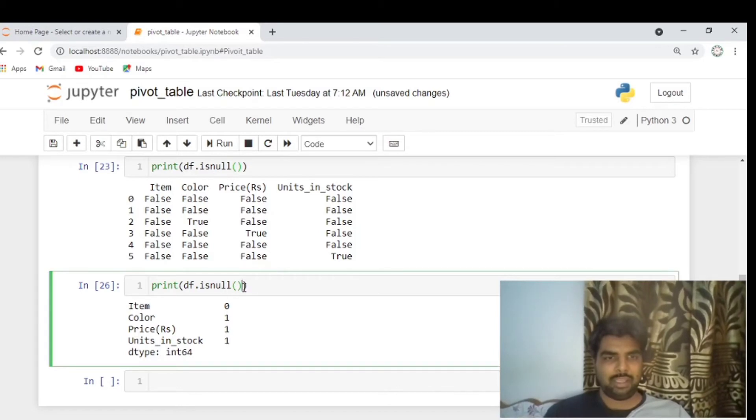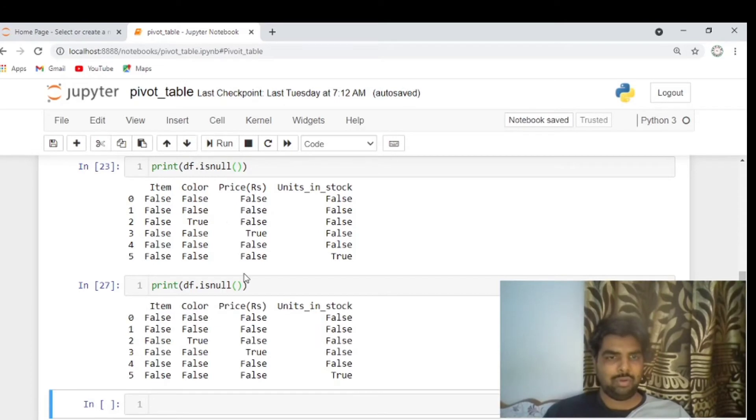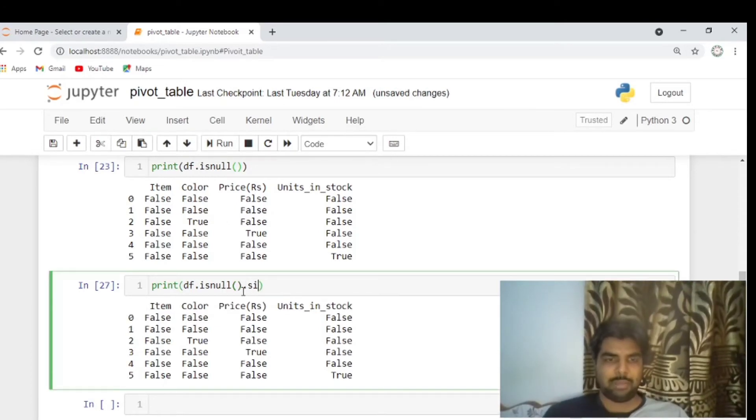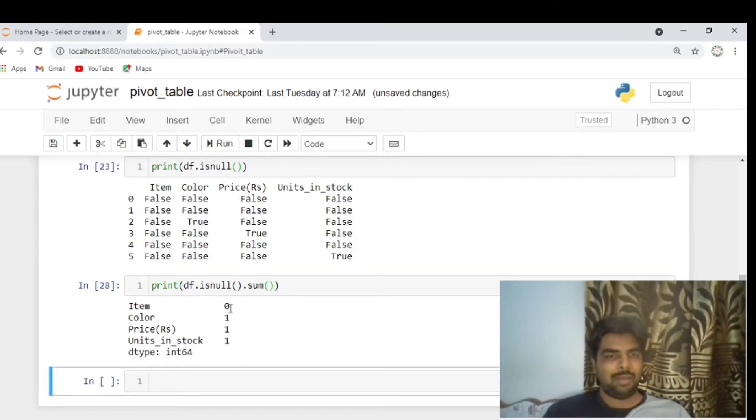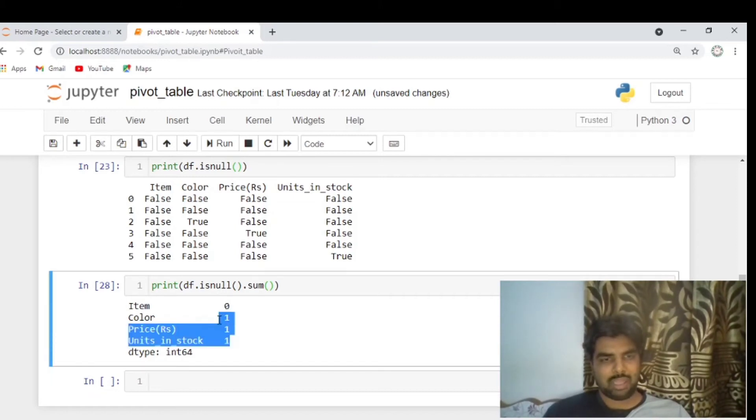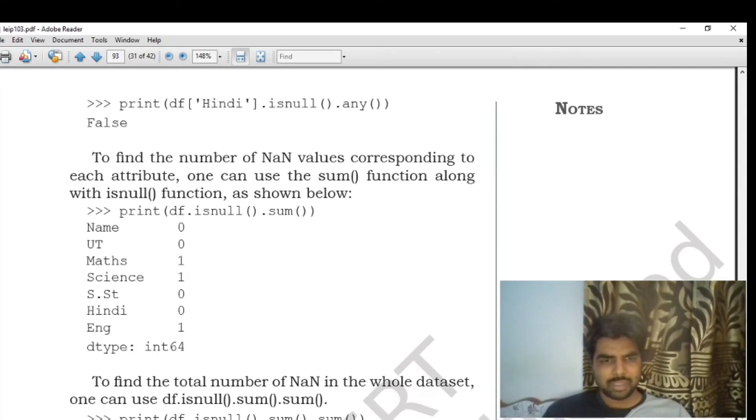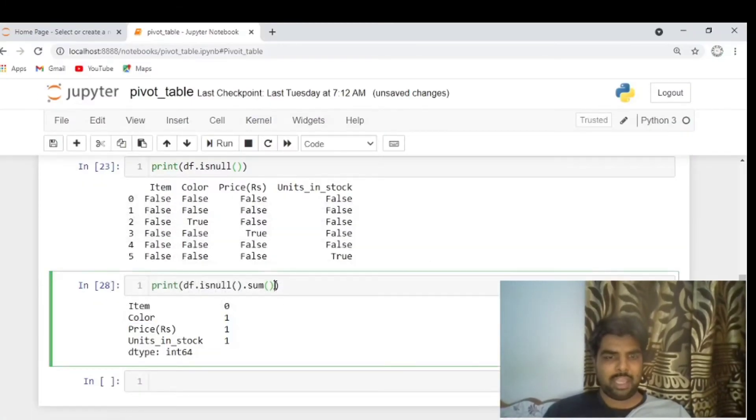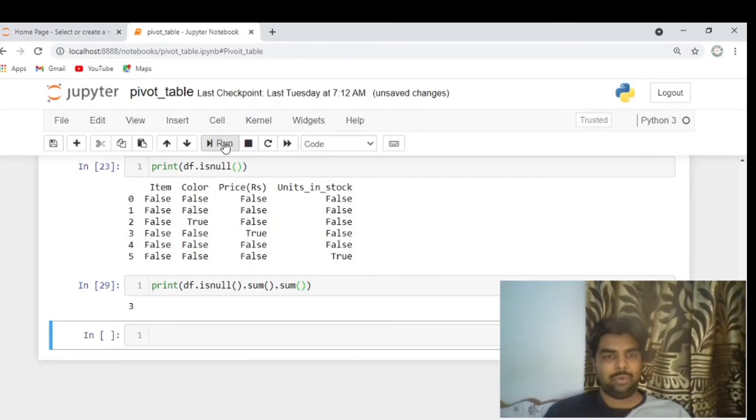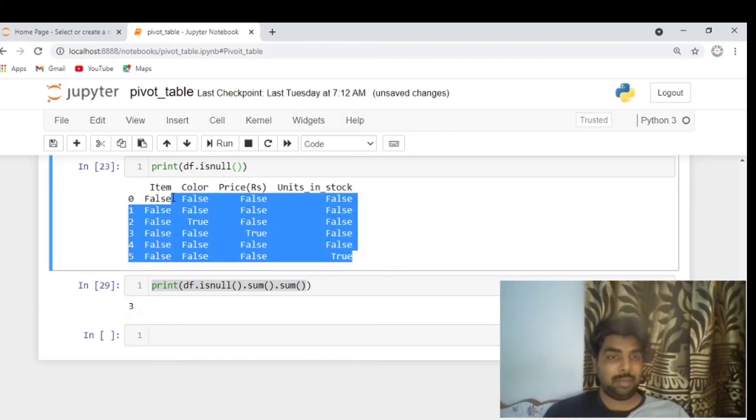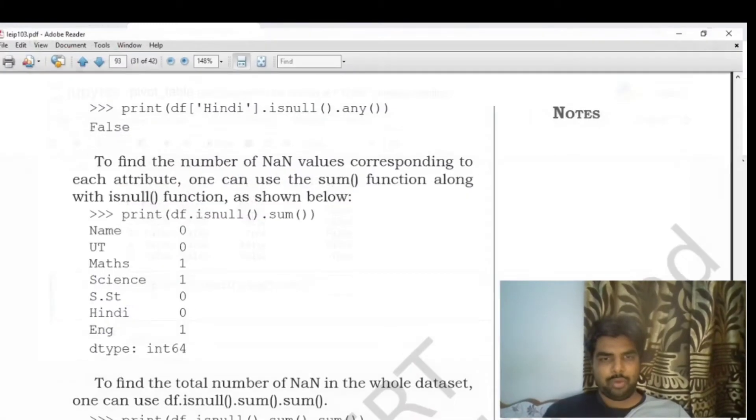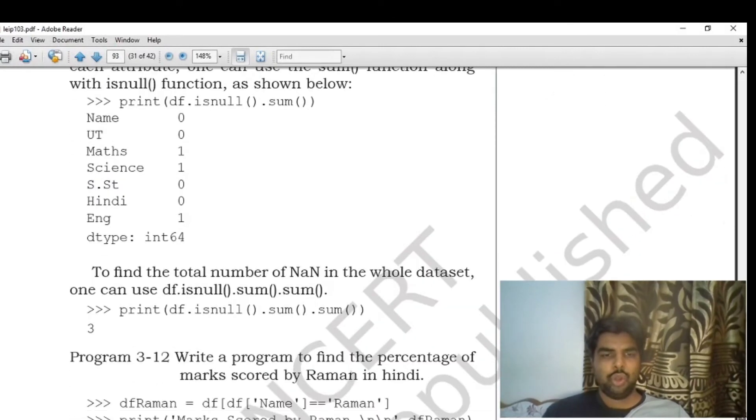What do we do? We use df.isnull and then sum to count the total missing values. The first column has 0 missing values, and the rest have 1, 1, 1. To get the total, we can write dot sum one more time. This sums all the missing values and gives us the total count.